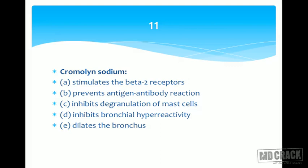Most importantly, chromolin is useful only for prevention. The drug must be present before the antigen-antibody reaction occurs and before mast cell degranulation. Once the reaction has happened and the mast cell has degranulated, chromolin has no place. Please remember: chromolin cannot be used to treat acute breathlessness — it is useful only for prevention.